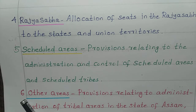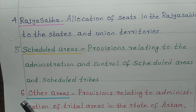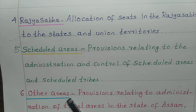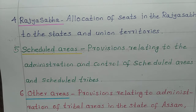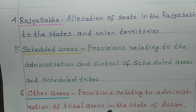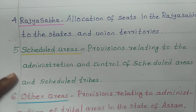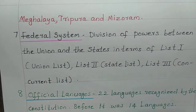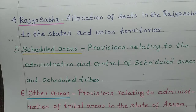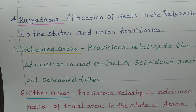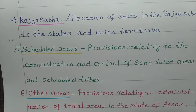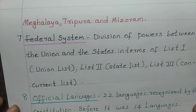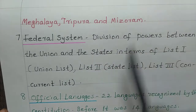Sixth schedule: keyword is other areas. This schedule deals with the provisions relating to the administration of tribal areas in the states of Assam, Meghalaya, Tripura, and Mizoram. So, 'other areas' means the provisions relating to the administration of tribal areas in these four states.